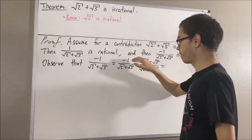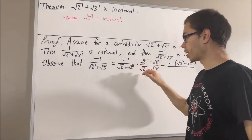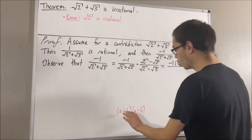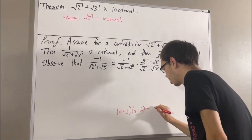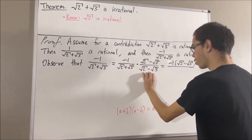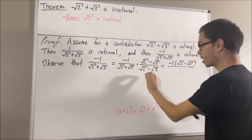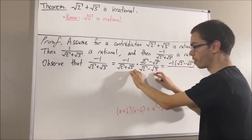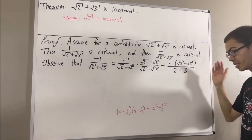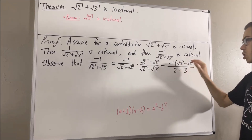In the numerator, we just have negative 1 times (square root of 2 minus square root of 3). In the denominator, we're multiplying something of the form (a + b)(a − b). If you recall, (a + b)(a − b) equals a squared minus b squared. Applying this here, (square root of 2 plus square root of 3)(square root of 2 minus square root of 3) gives us square root of 2 squared minus square root of 3 squared — in other words, 2 minus 3, which equals negative 1. So the negative 1 in the numerator and the negative 1 in the denominator cancel out, and this is just equal to square root of 2 minus square root of 3.